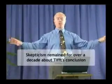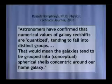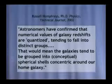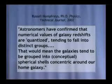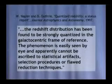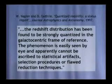Neither one of those astronomers are creationists — they're both evolutionists who found this. Russell Humphreys, Ph.D. in Physics, writes: 'Astronomers have confirmed that numerical values of galaxy red shifts are quantized, tending to fall into distinct groups. That would mean the galaxies tend to be grouped into conceptual spherical shells concentric around our home galaxy.' That was 2002. And it has been confirmed. Writing in 1997 in the Journal of Astrophysics and Astronomy: 'The red shift distribution has been found to be strongly quantized in a galactocentric frame of reference. The phenomena is easily seen by eye and apparently cannot be ascribed to statistical artifacts, selection procedures, or flawed reduction techniques.' Quantized red shifts have been confirmed, and now the Hubble telescope has confirmed it out to a billion light years.